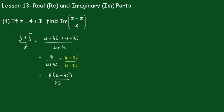This may have cancelled, but it didn't, so I'll expand the top. It becomes 32 minus 24i over 25.